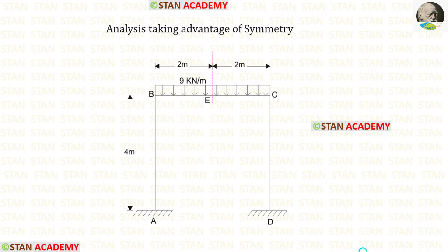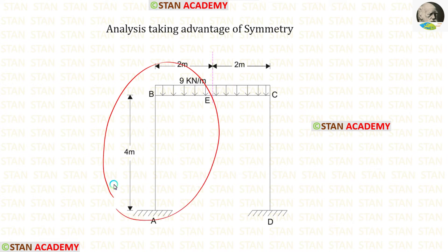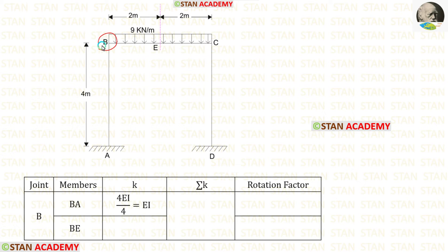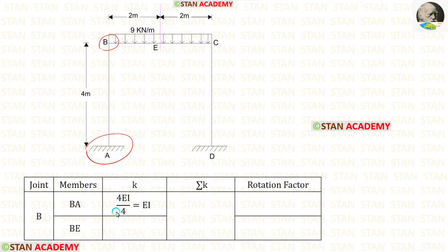In this analysis, we are going to take advantage of the symmetry of the frame. In the beam BC, let us split the frame into two parts at the center, and use the left side of the frame. From joint B, let us find the stiffness for BA. From joint B, looking at point A, there is a fixed support. If the far end is fixed, the formula is 4EI upon L. The length of BA is 4, so the stiffness of BA is EI.